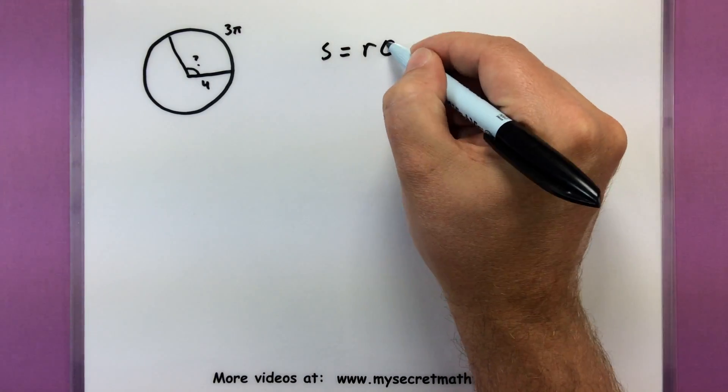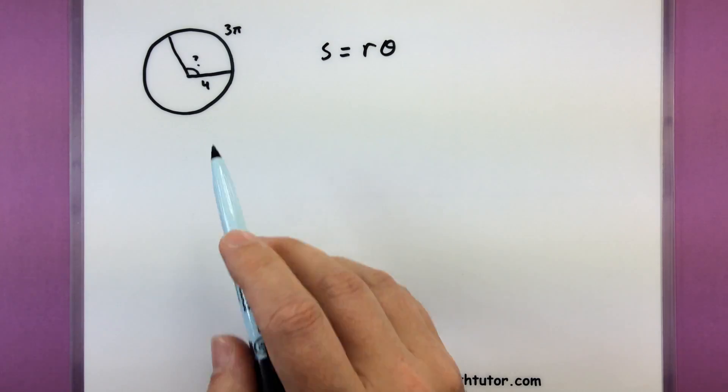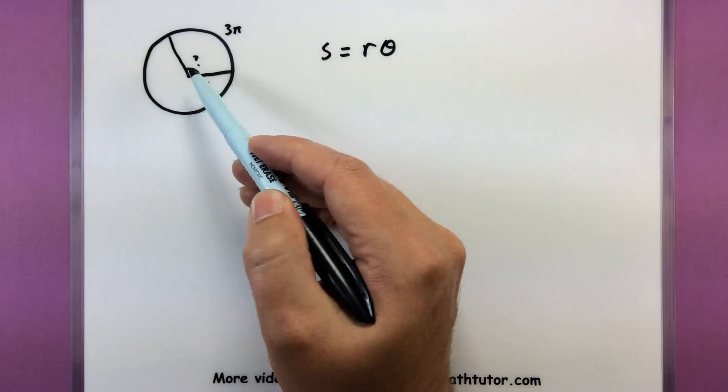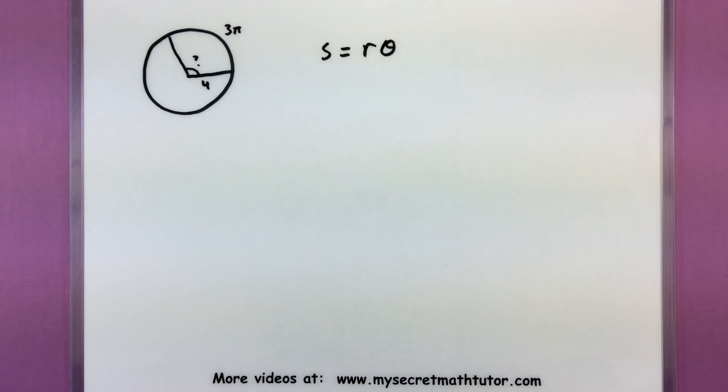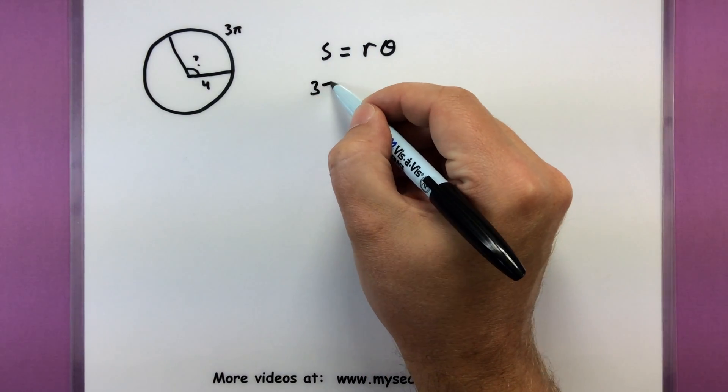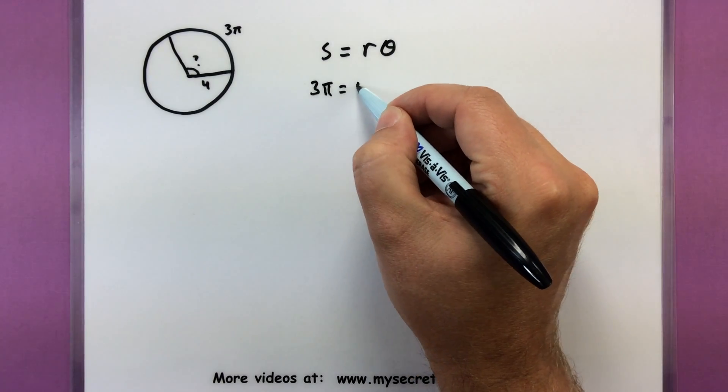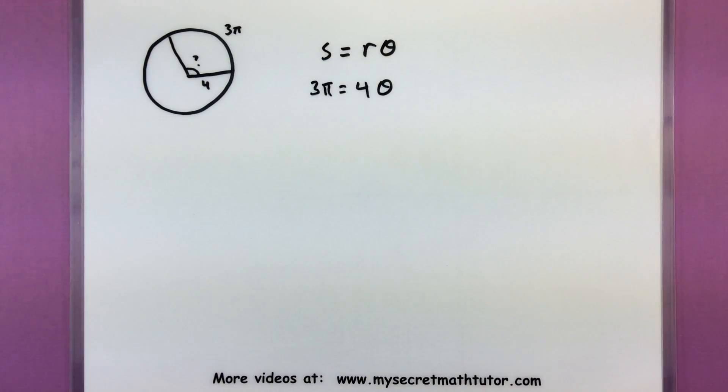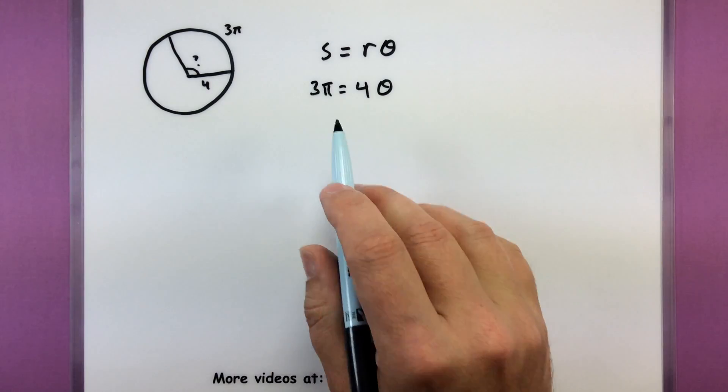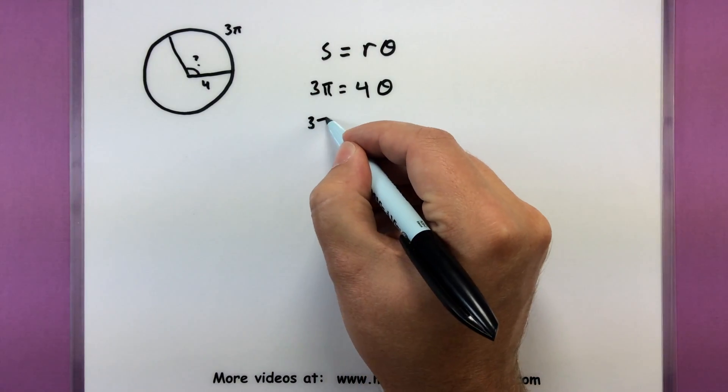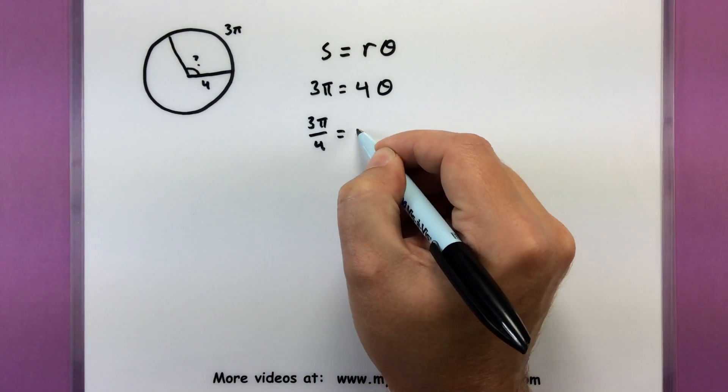Arc length equals radius times θ. So we can use this to get our foot in the door and actually figure out what this angle is and then jump into our area formula. So my arc length is 3π. My radius is 4, but what I don't know is my angle. No problem. Divide both sides by 4. That'll give us our angle.